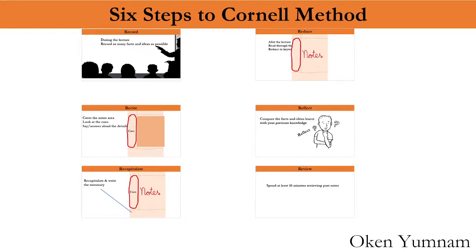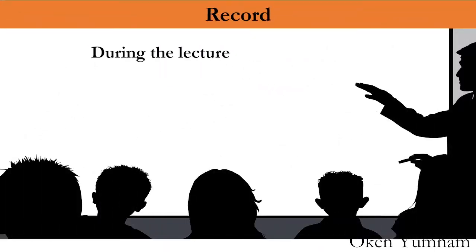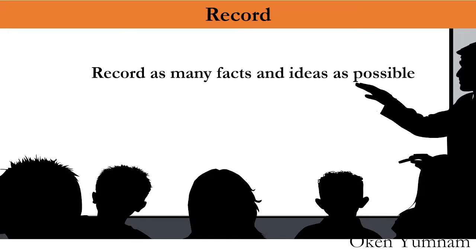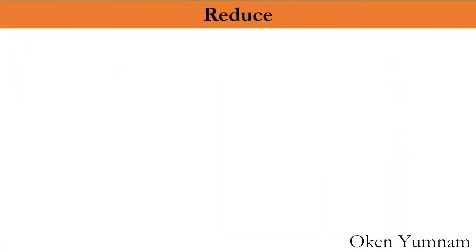There are six steps to note-taking in the Cornell method, or let's call it six R's: record, reduce, recite, reflect, recapitulate, and review. First of all, let's talk about record. During the lecture, we have to record as many facts and ideas as possible in taking notes.